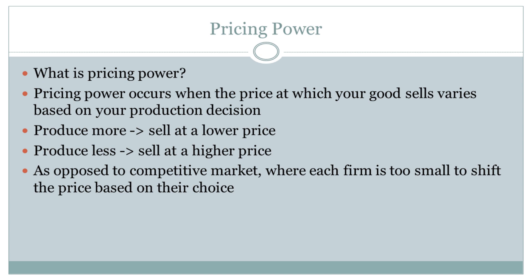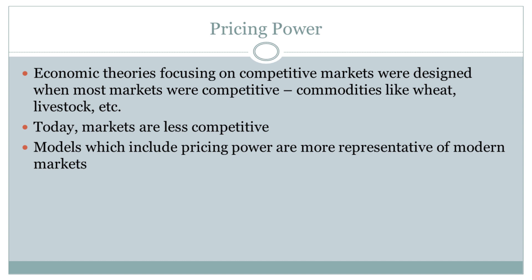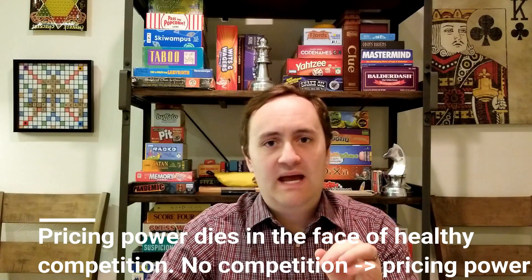A lot of the theories about competitive markets came about when a lot more markets were competitive — talking about things like commodities, where everyone's selling really the same thing. Today, a lot of markets are less competitive. A lot of the things we buy have strong branding or strong technology associated with them, and in those situations it's harder to compete. Pricing power comes about when something limits the ability of others to compete against you — when you have some sort of limitation to competition and there's got to be some sort of barrier to entry.